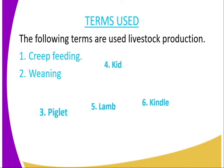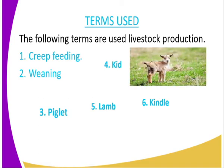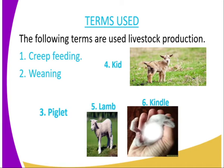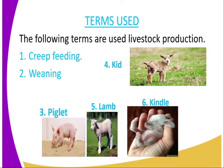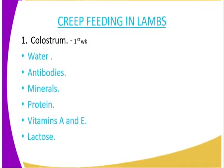Then we have weaning. Weaning means the time at which you eliminate the milk — you no longer feed them on milk, but give them herbage and other types of feed such as concentrate and also roughage. The piglet is the young one of a pig. The keet is the young one of a goat. The lamb is the young one of a sheep, and the kid is the young one of a rabbit.